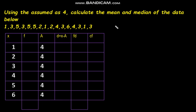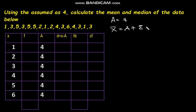Let's start with this problem. Using the assumed mean as 4, calculate the mean and the median of the data below. Now, if they give us the assumed mean, we use the formula: mean is equal to assumed mean plus summation of frequency times the deviation, divided by the summation of frequency.